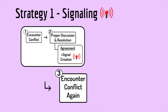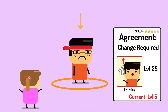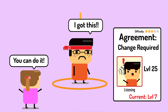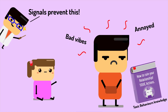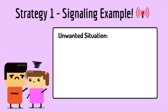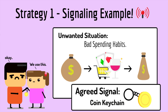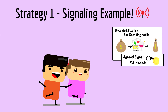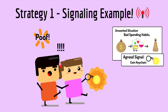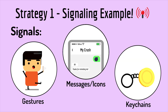So next time you encounter the problem again, you simply use the agreed signal to allow your partner the space to take ownership and, with some encouragement, bring them one step closer to the agreement standards. Using signals also prevents guessing games where you indirectly hurt each other with toxic actions. For example, if there is an unwanted habit both you and your partner agree would be better off without — like spending or drinking habits — a signal or keyword can be used instead of confronting the problem again, like using a keychain.